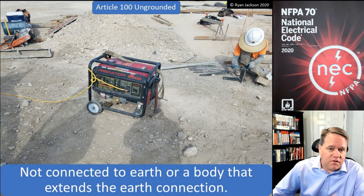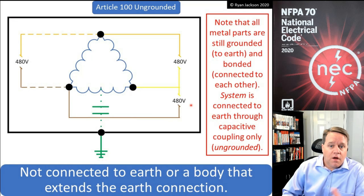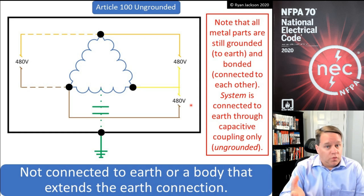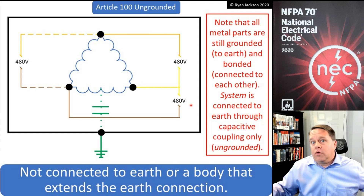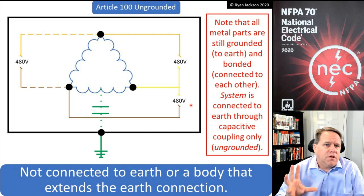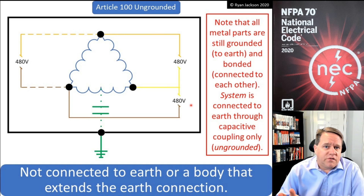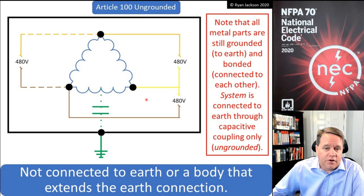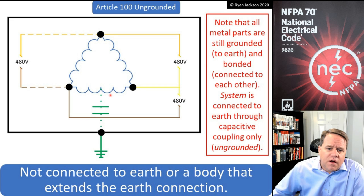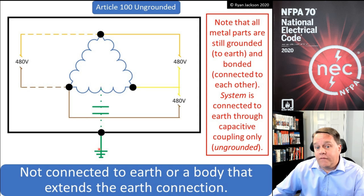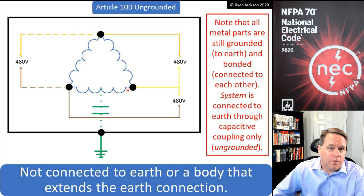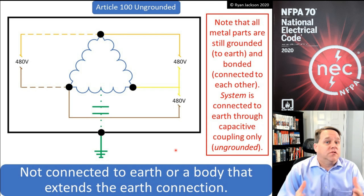This generator is an ungrounded system — the windings, the internal components, are not connected to the earth. For an ungrounded system, if we're talking about something bigger than a portable generator — an actual wiring system — you'd see an ungrounded system in some industrial facilities, usually older ones, though you can still install one today. An ungrounded system is usually a delta: a three-phase, three-wire delta, 480V. The metal parts and the transformer enclosure are grounded and connected to the earth via a grounding electrode system — maybe two ground rods or a concrete-encased electrode. But the actual windings of the transformer are not connected to the earth. That's an ungrounded system.